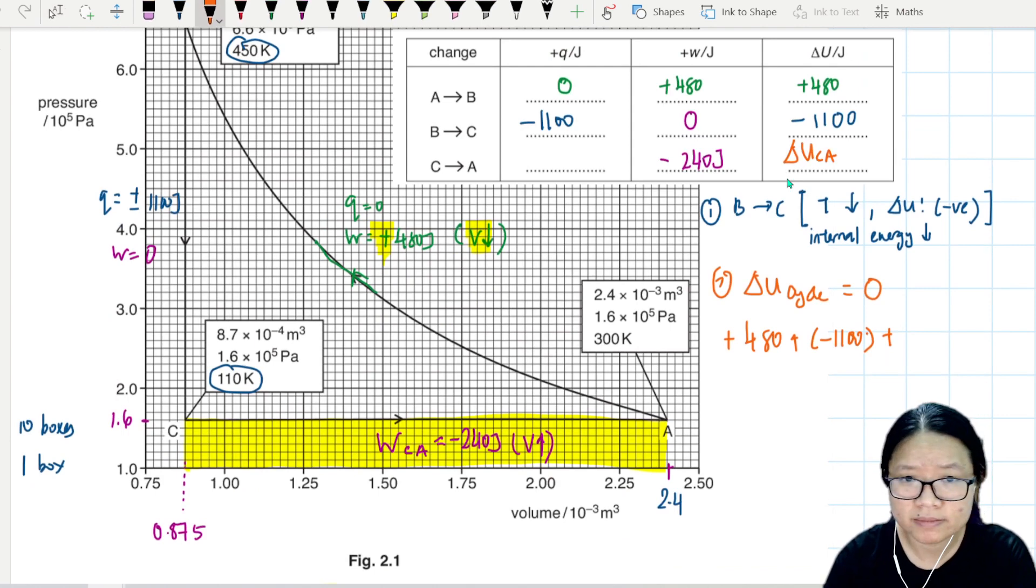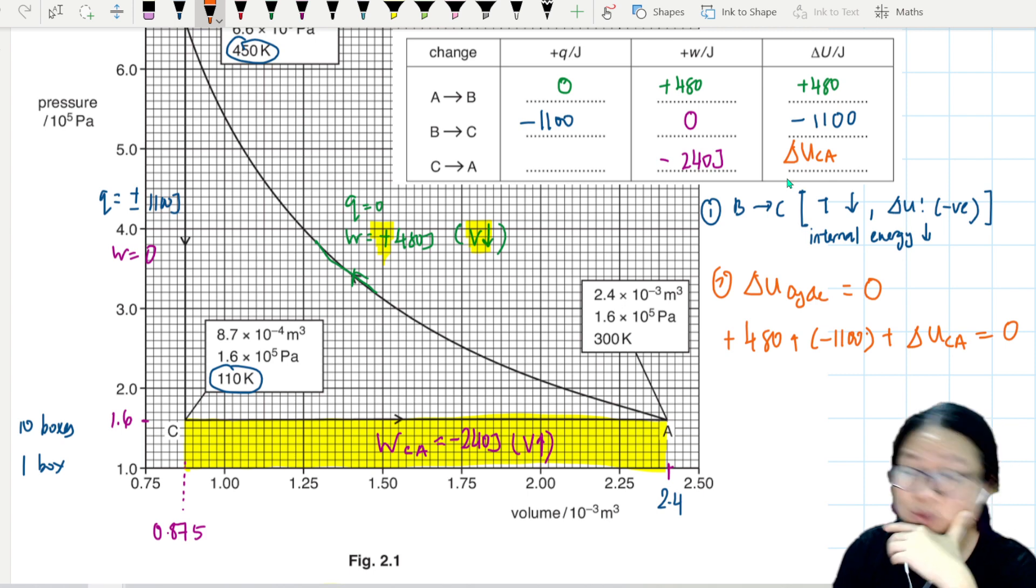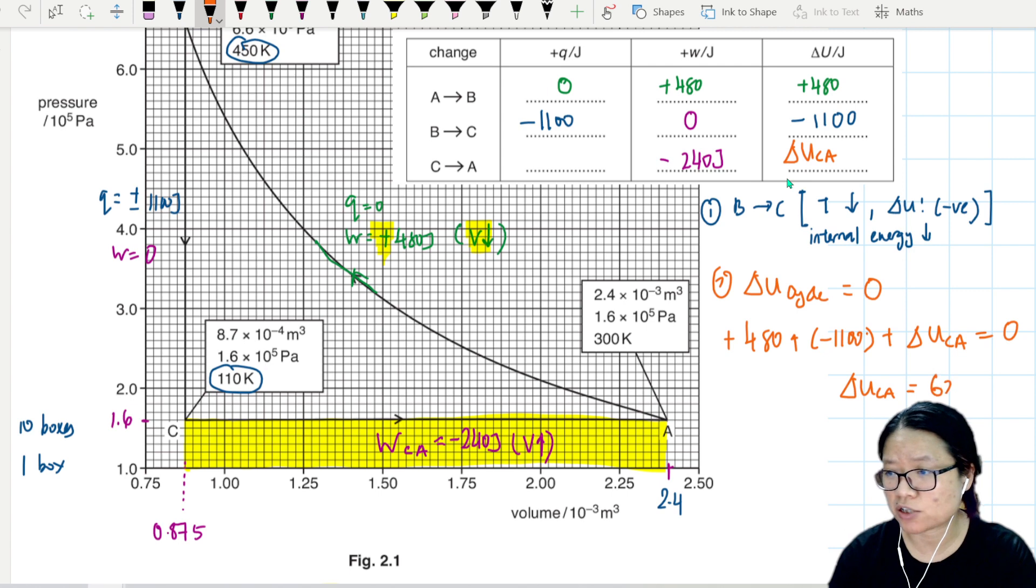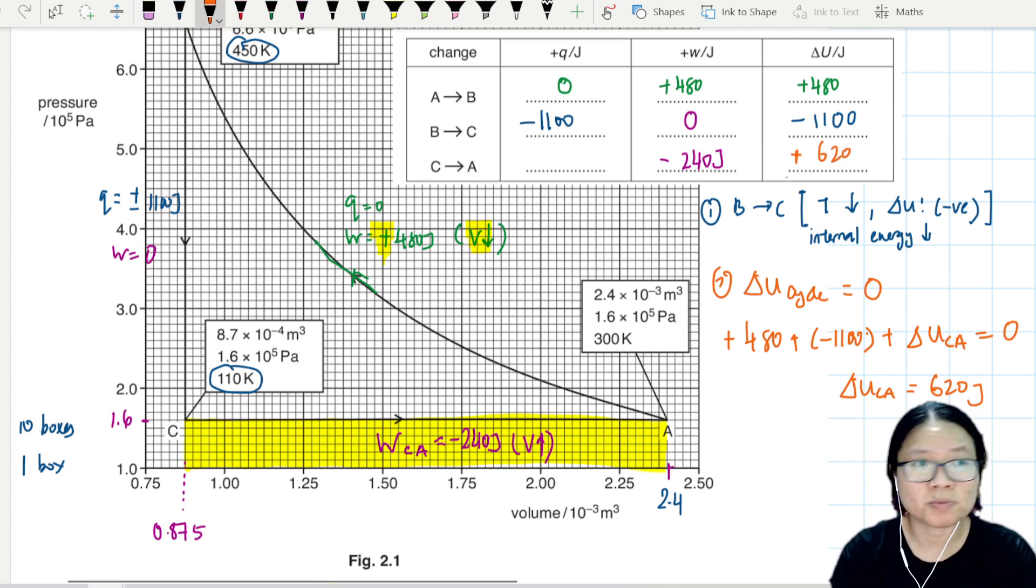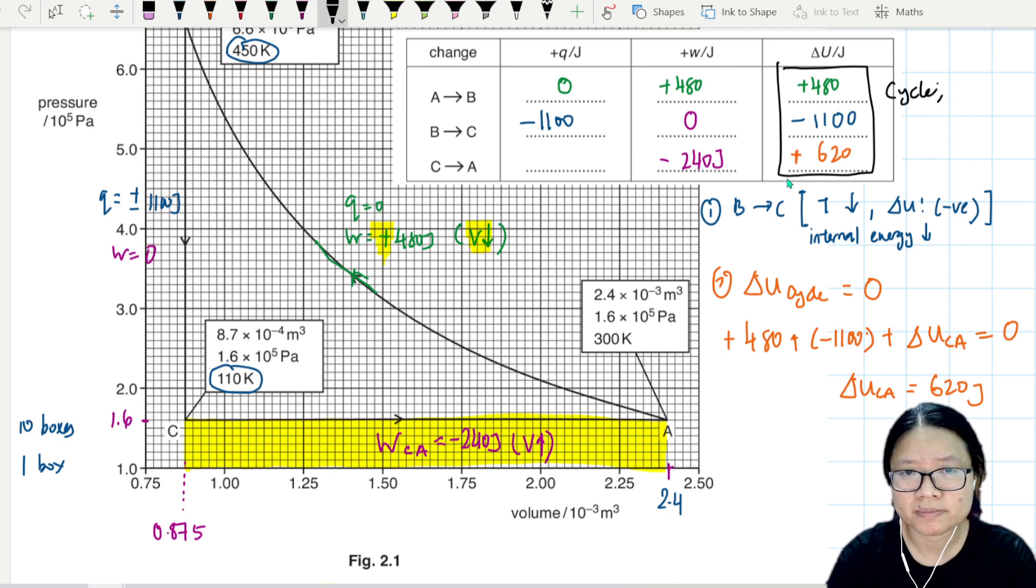Delta U for C to A is equal to zero. So what's the delta U for C to A? That will be 1100 minus 480, giving you 620 joules. This is 620 positive. Must write sign. Hello ladies and gentlemen, sign is very important for the first law. So basically, if you total up this line, everything here, if it's a cycle, the sum is zero. So 480 minus 1100 plus 620 is zero.